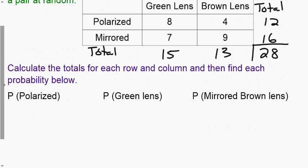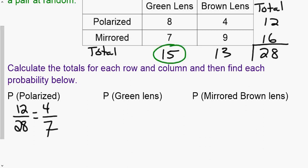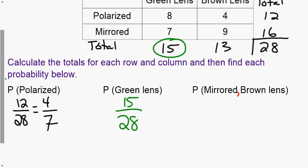Now that we have our totals, we can calculate probabilities. The probability of randomly selecting a polarized pair: there are 12 polarized out of 28 total, which reduces to four-sevenths. The probability of green lens: the green lens total is 15 out of 28, which doesn't reduce. For a mirrored brown lens — given we draw a brown lens, what's the probability it is mirrored — we look only in the brown column: nine mirrored out of 13 brown sunglasses.